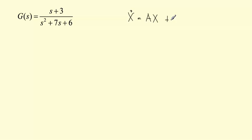plus some vector b multiplied by the input and our output vector x will be some column vector transposed multiplied by x which is the state-space vector.